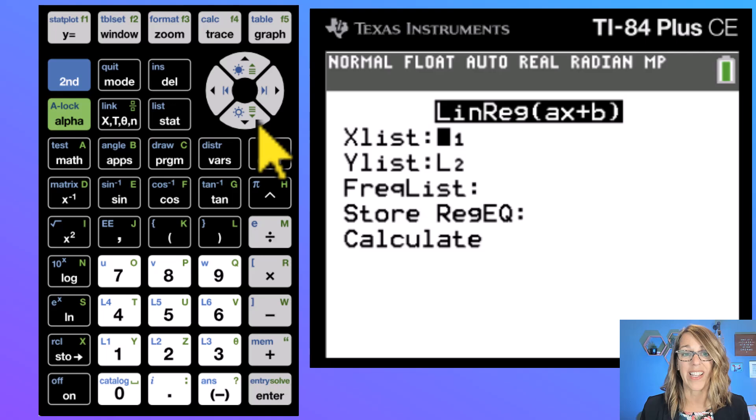I'm going to choose number four and then hit enter. Now it's checking that you've got your x list and your y list in the right place. I already do. If you don't, you can hit second followed by one for L1, second followed by two for L2 and so on. Okay, those are great.